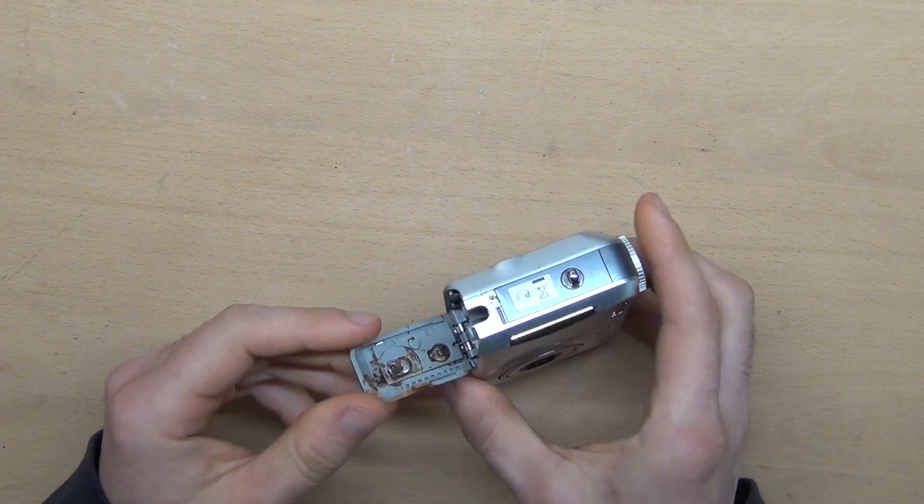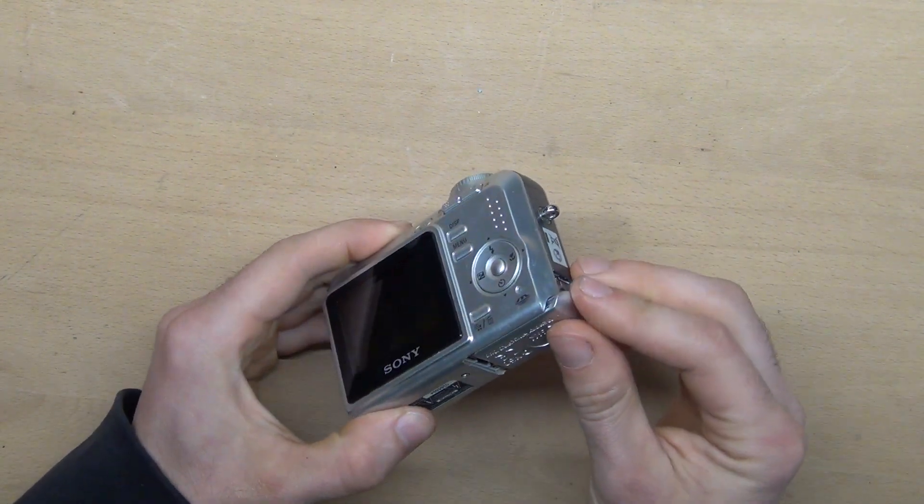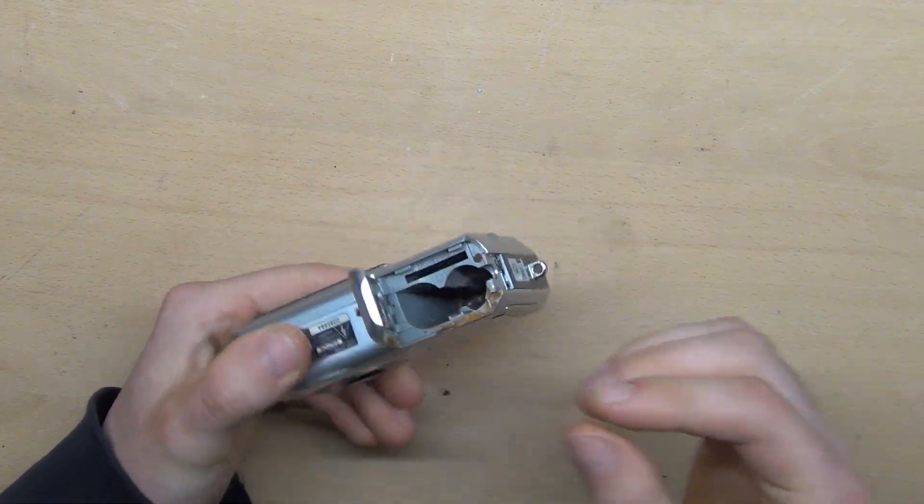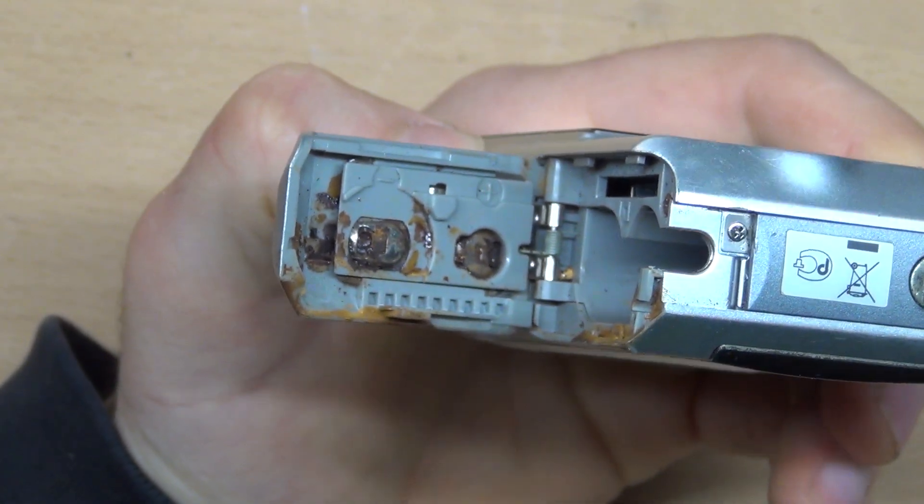Like many old cameras, it suffers from leaking batteries. The batteries have leaked and the battery door is stuck and won't close.